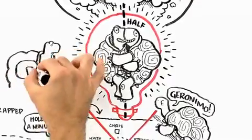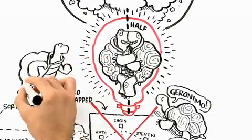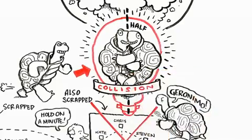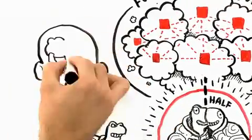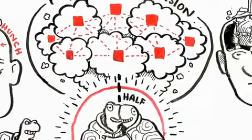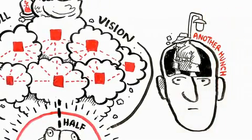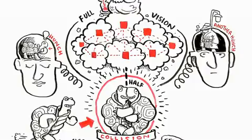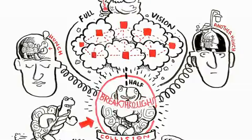The other thing that's important when you think about ideas this way is that when ideas take form in this hunch state, they need to collide with other hunches. Oftentimes, the thing that turns a hunch into a real breakthrough is another hunch that's lurking in somebody else's mind. And you have to figure out a way to create systems that allow those hunches to come together and turn into something bigger than the sum of their parts.